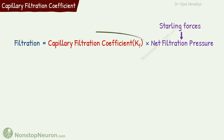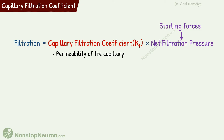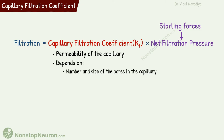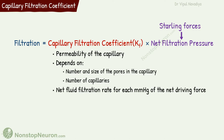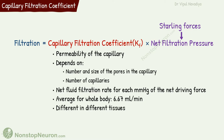Now let's talk about capillary filtration coefficient. In simple words, it is the permeability of the capillary. It depends on the number and size of pores in the capillary as well as the number of capillaries. It is expressed as the net fluid filtration rate for each mmHg of net driving force. The average capillary filtration coefficient for the whole body is 6.67 mL per minute. However, capillaries in different tissues have different permeability, so the exact filtration coefficient differs in different tissues.